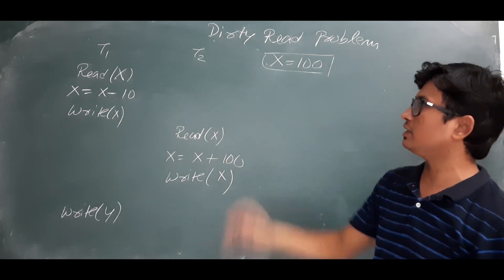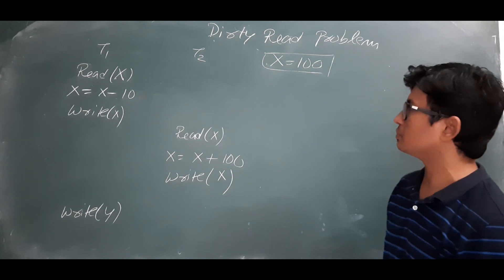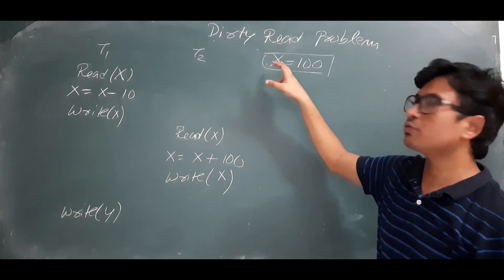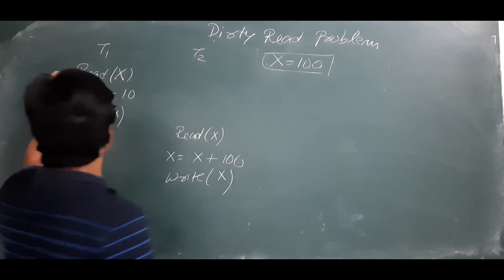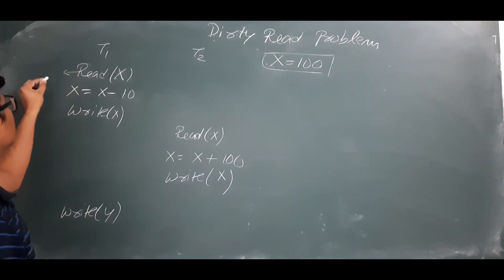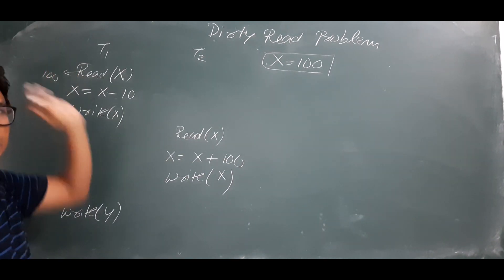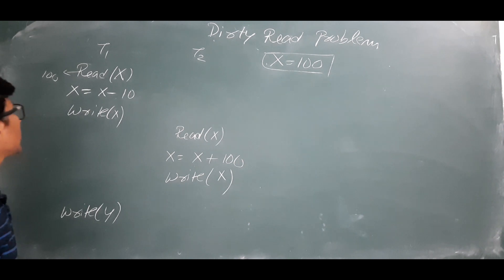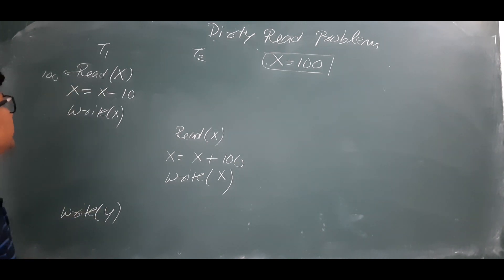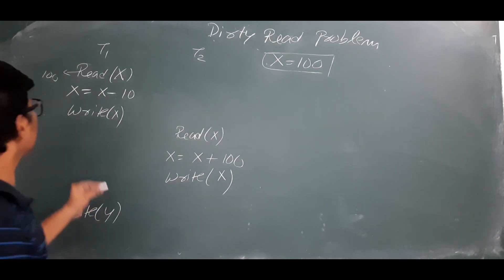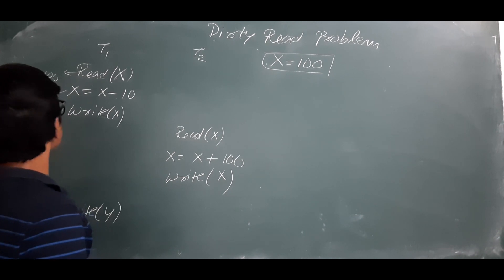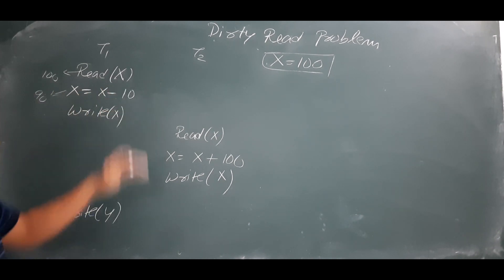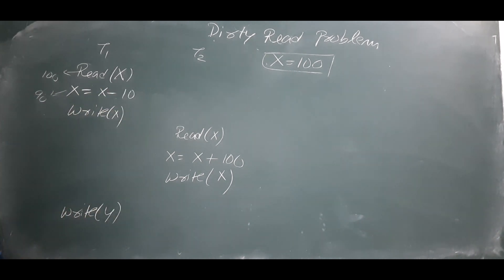The schedule consists of transaction T1 and transaction T2. Initially the x value is 100. When transaction T1 executes the read operation, it will read x as 100. Now x is equal to x minus 10, so x becomes 90, because from 100 if you subtract 10 it will be 90.